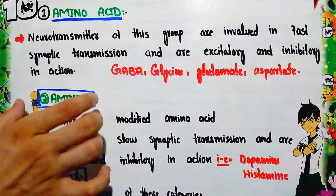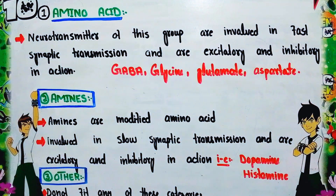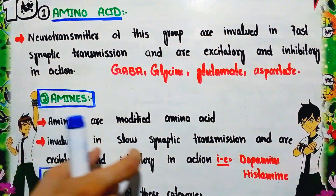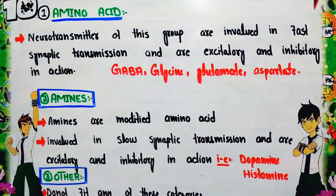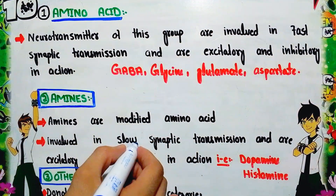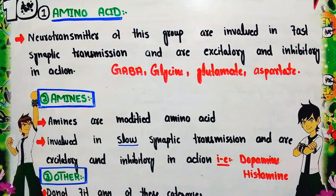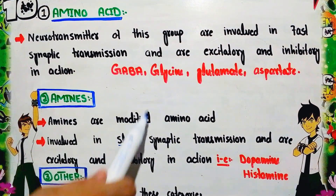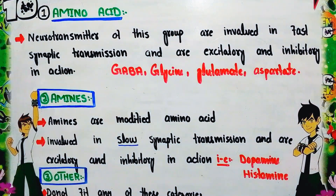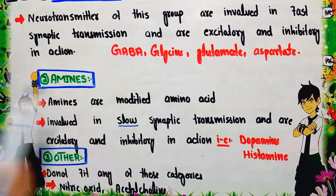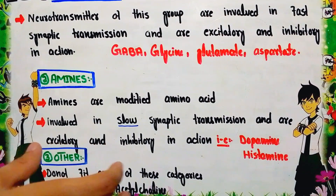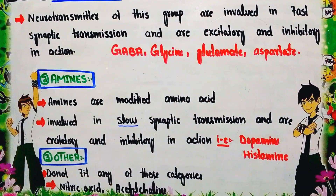The second category based on chemical nature is amine neurotransmitters — modified amino acids formed from amino acids. These are mainly involved in slow synaptic transmission and can show inhibitory and excitatory action at the postsynaptic membrane. Examples include dopamine, histamine, adrenaline, and noradrenaline.